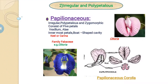The second form is Irregular and Polypetalous condition. In this form, it is present in the Papilionaceous Corolla. This Papilionaceous Corolla is irregular and Polypetalous, meaning free petals are present. They are Zygomorphic — when divided, you do not get equal parts. It consists of five petals.